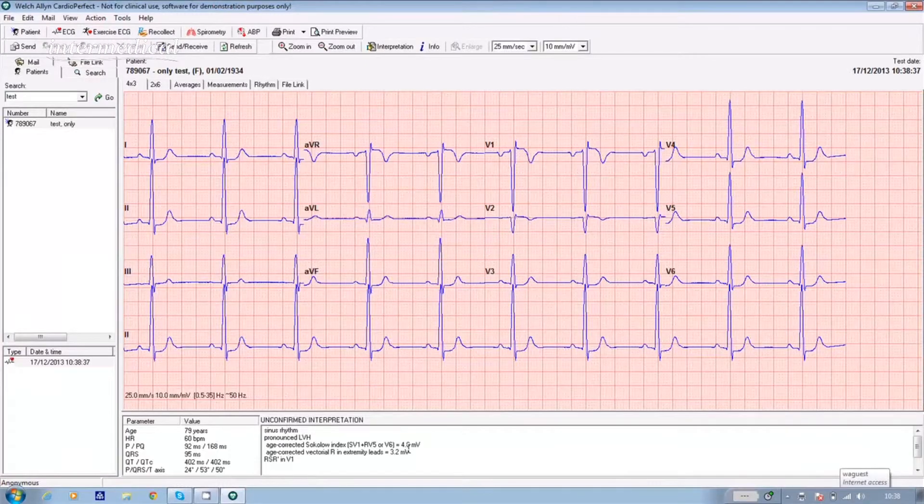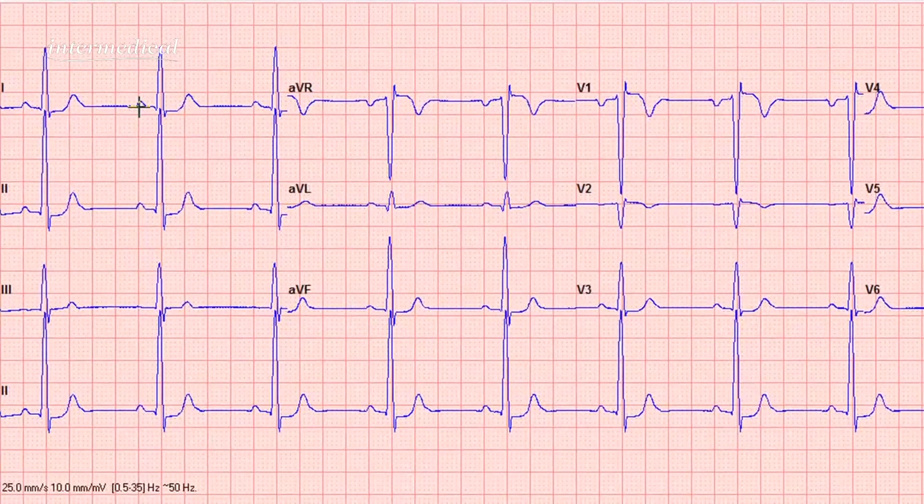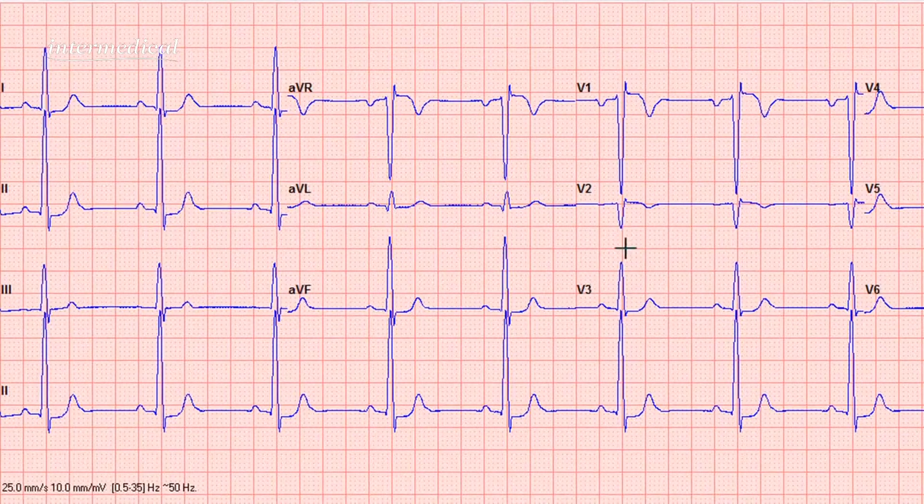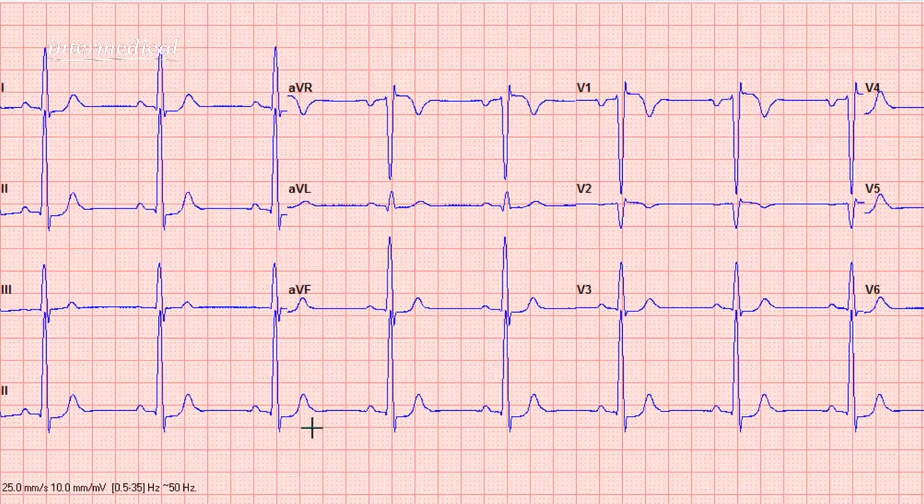And from there it can be attached to the individual's patient record. The standard format of the ECG will be three lines with four leads on each and at the bottom, a lead two rhythm strip.